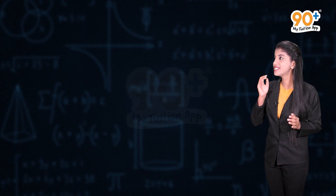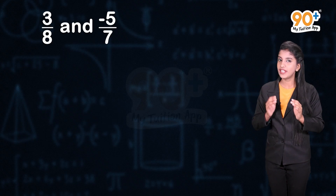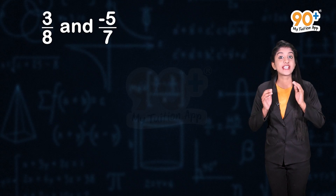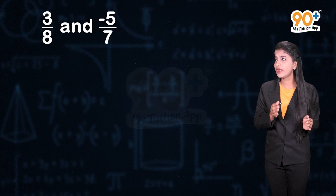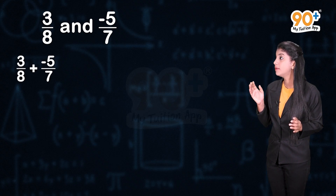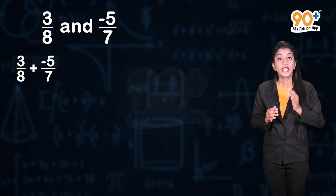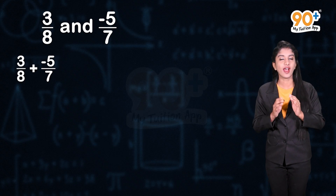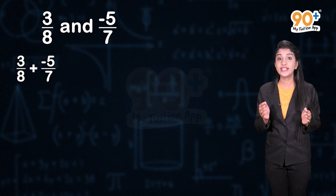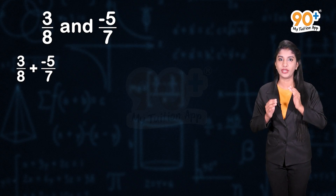Now, students, consider two rational numbers: 3 divided by 8 and minus 5 divided by 7. Let us add these rational numbers. What is 3 divided by 8 plus minus 5 divided by 7? Here, the denominators of both the rational numbers are different. So to add these rational numbers, we have to make the denominator the same.